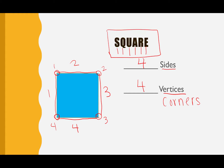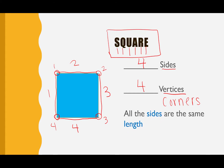There's also one more special thing that we need to know about squares: all the sides are the same length. That means all of the sides — one, two, three, four sides of our square — are all going to be the same size.